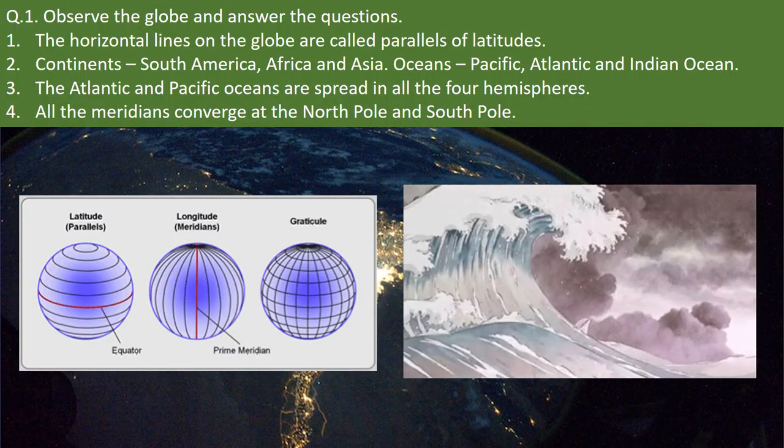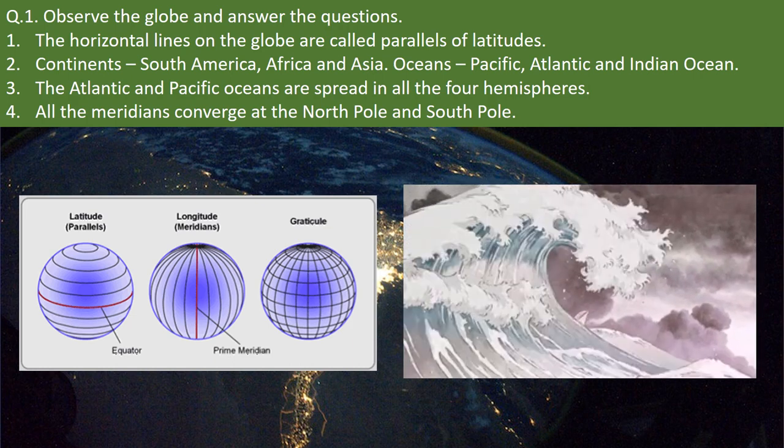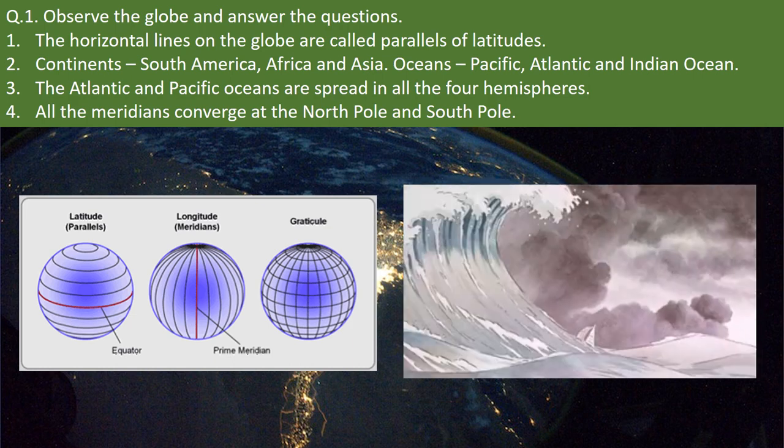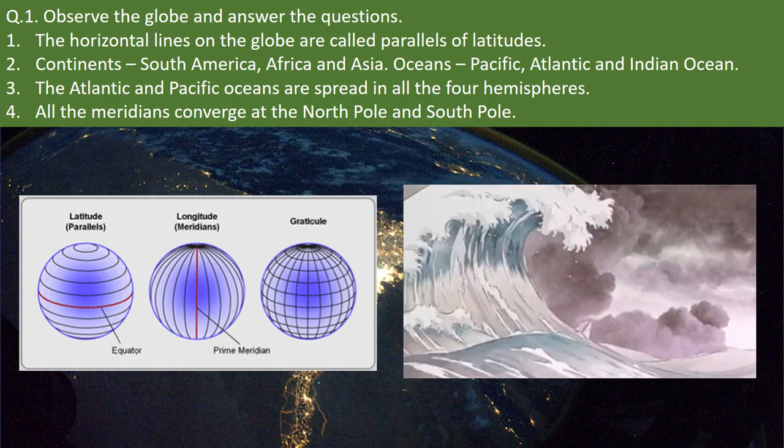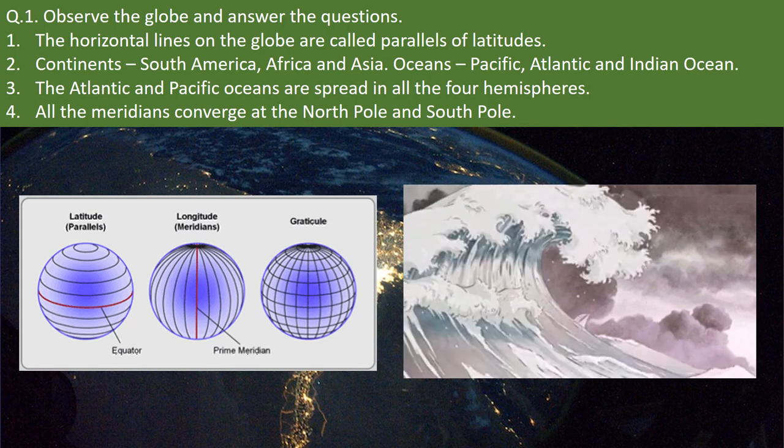Let us observe the globe and answer the questions. What are the horizontal lines on the globe called? The horizontal lines on the globe are called parallels of latitudes.